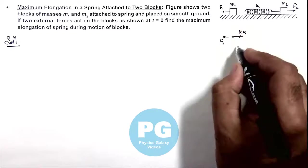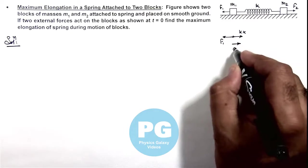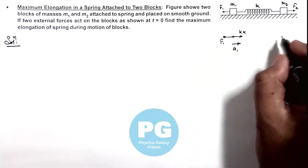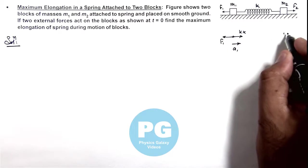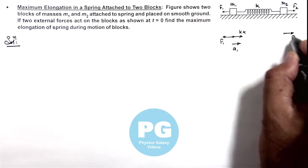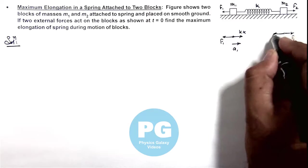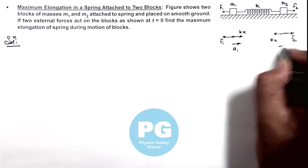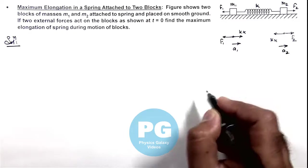However initially it may move in some different way. And for block 2, it is experiencing f₂ toward right and kx toward left and say it is moving toward right with acceleration a₂.